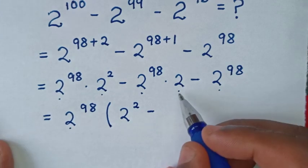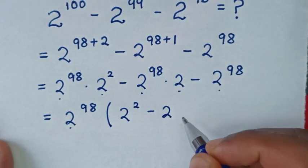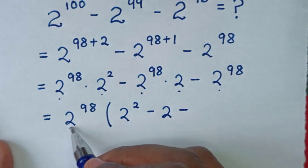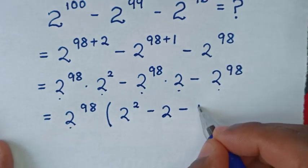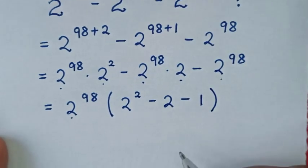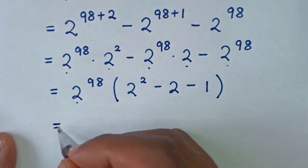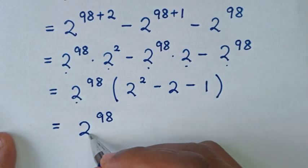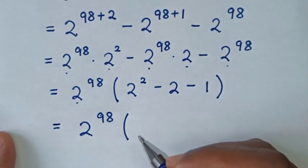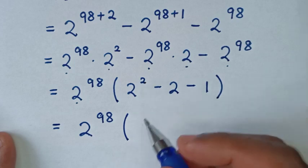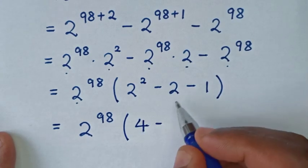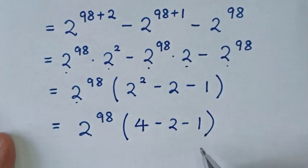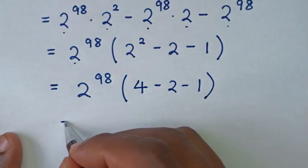Then minus 2 power of 98 divided by 2 power of 98 gives us 1, closing the bracket. So we have 2 power of 98 times the bracket: 2 power of 2, which is 4, minus 2, minus 1.